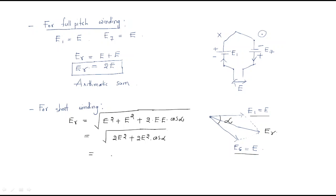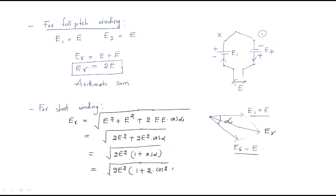Taking 2e² common from both terms gives √(2e²·(1 + cos α)). We apply the trigonometric identity: cos α = 2cos²(α/2) − 1, so 1 + cos α = 2cos²(α/2). The reason for doing this is to remove the '1' so that taking the square root becomes easy, and the ones cancel out.